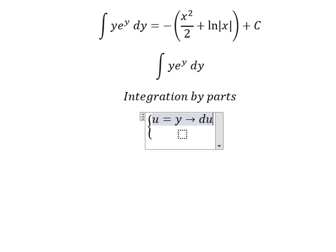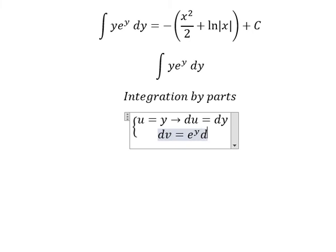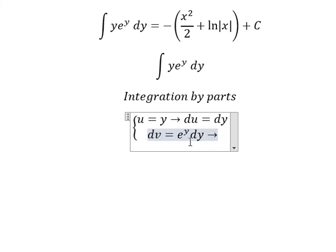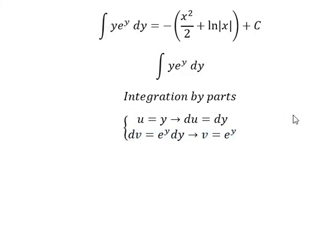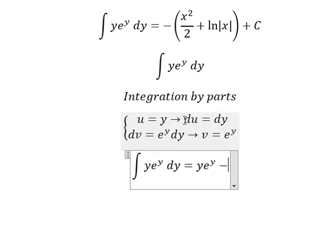dv we have e to the power of y dy, so the integration of this one we have v equals to e to the power of y. So we have u multiplied by v minus we have u multiplied by v.